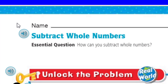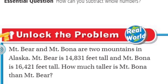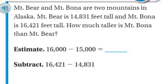Let's make sure that we do what we always need to do, which is unlock the problem. That's right, my friends, because it's real world. It says here Mount Bear and Mount Bona are two mountains in Alaska. Mount Bear is 14,831 feet tall, and Mount Bona is 16,421 feet tall. How much taller is Mount Bona than Mount Bear? And it says here we're going to estimate first.